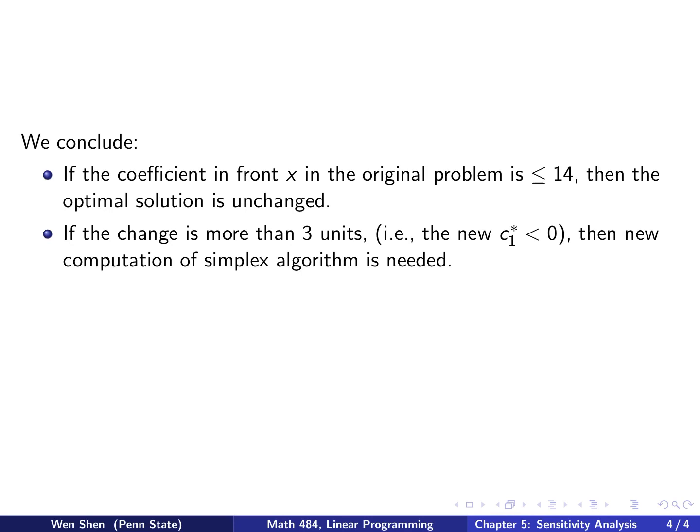However, if the change is more than 3 units, let's say the new c1 star now will be negative, then it's no longer optimal, and we will have to perform more or new computational simplex algorithm on that tableau. If you are considering a difference to c1 where xi is not a basic variable, then the very similar argument would apply. That's all for this little video. We'll discuss more details in the next one. See you then. Thank you.